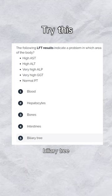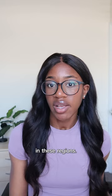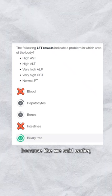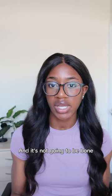If you picked the biliary tree, then you're correct. It's not going to be the blood or intestines because these aren't really the markers we'd be looking for if there were pathology in these regions. And it's not going to be hepatocytes because AST and ALT are found in the liver, so they would be much more raised in liver disease or even alcoholic liver disease.